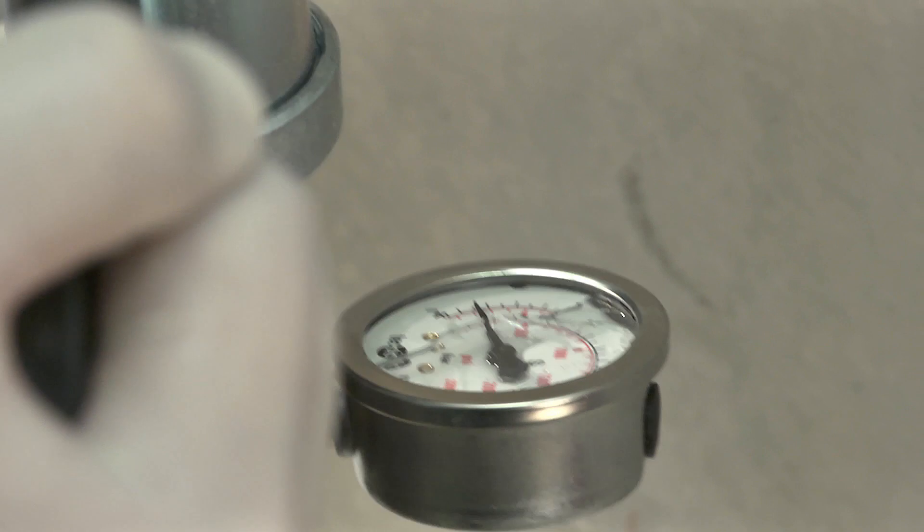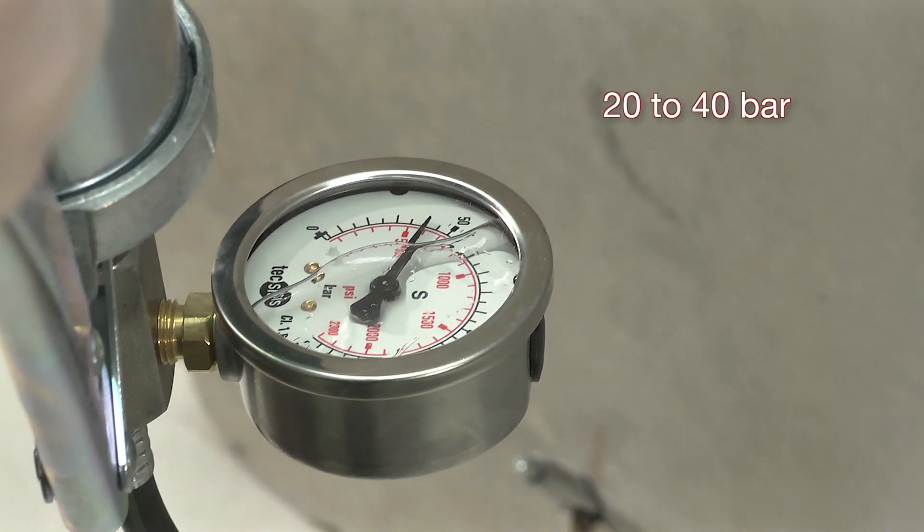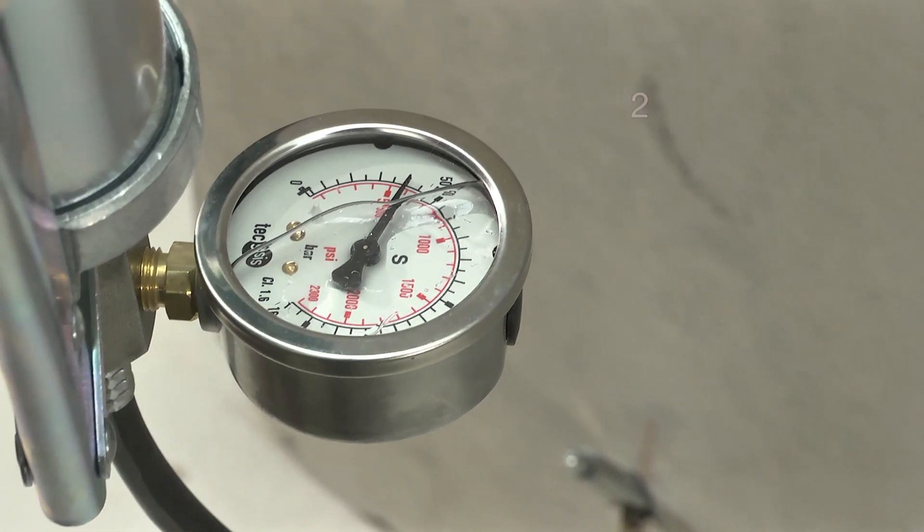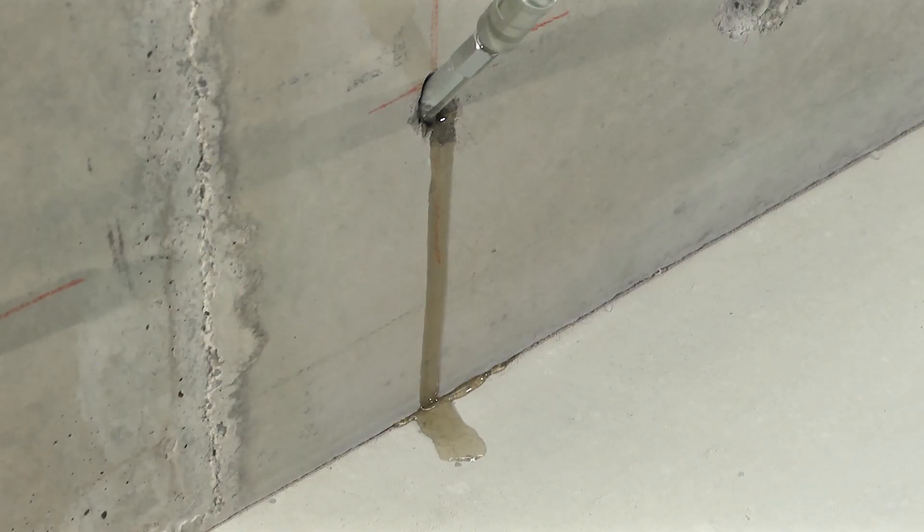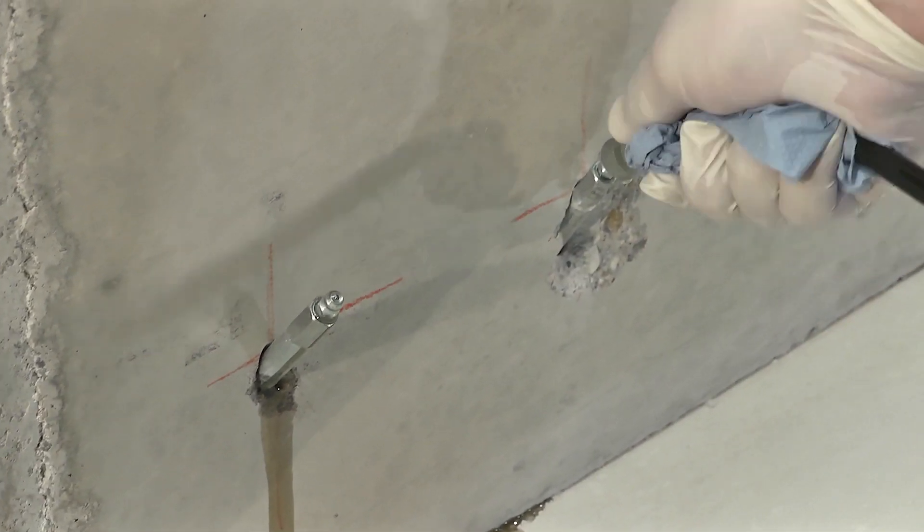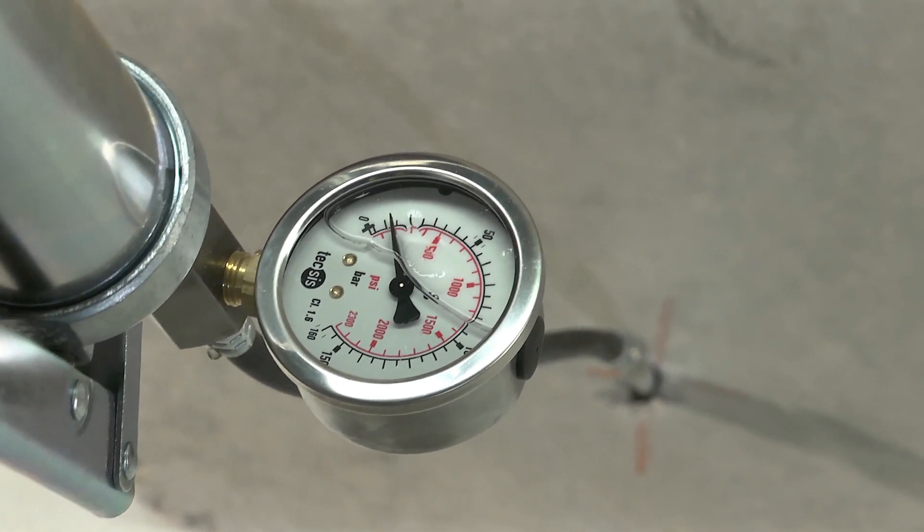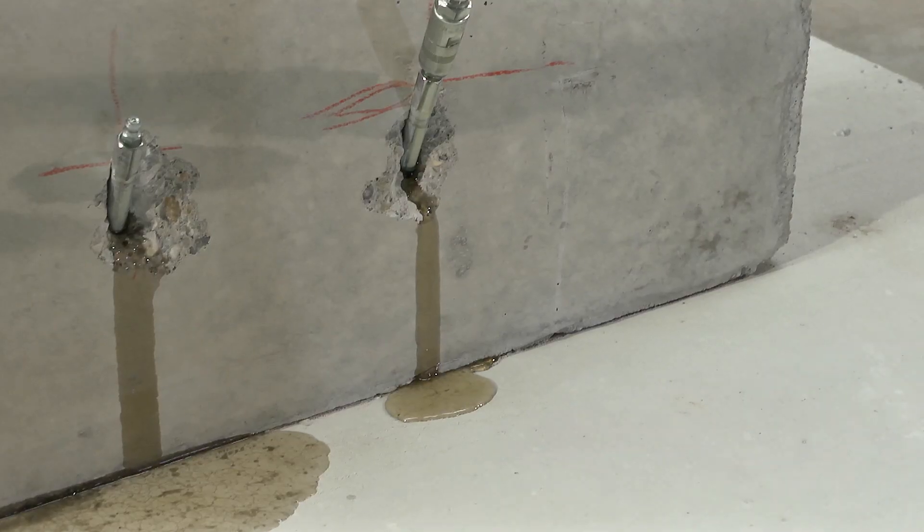Injection pressures should be in the range of 20 to 40 bar. If pressures in excess of 80 bar are encountered, this generally indicates that there is a problem, for example, a drilled hole that did not go through the crack or joint. The injection log should always be maintained during grouting operations.